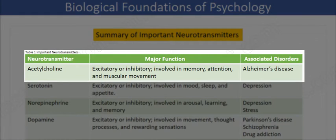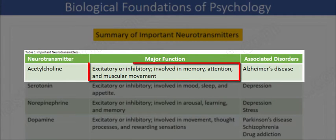Acetylcholine is one of the first and best-understood neurotransmitters, and it's present at many synapses throughout the nervous system. It's commonly excitatory, but it can also be inhibitory, depending on the type of receptor molecule that is located in the membrane of the postsynaptic neuron.